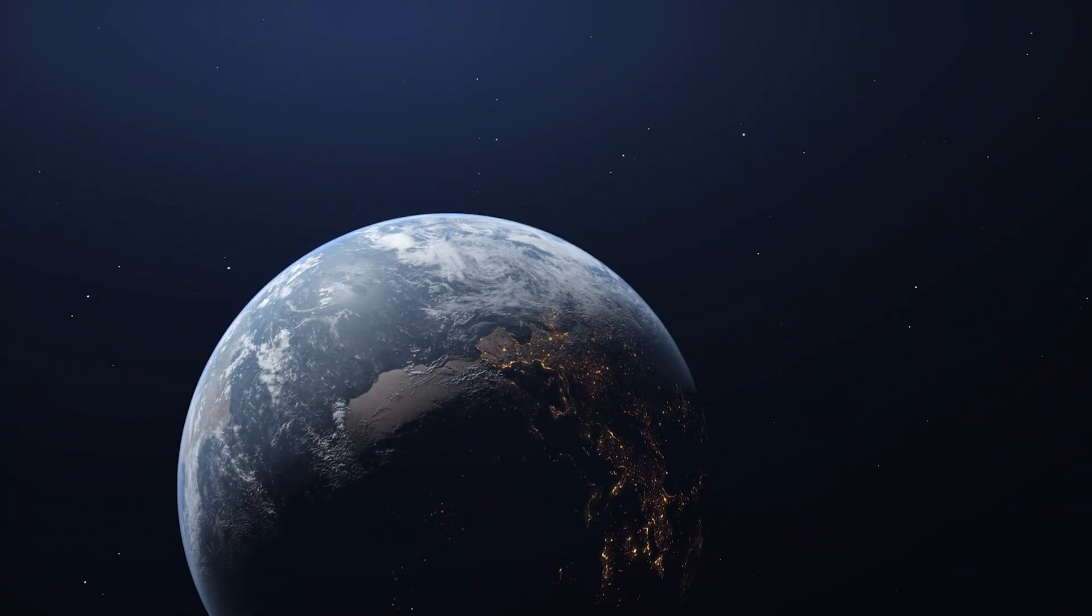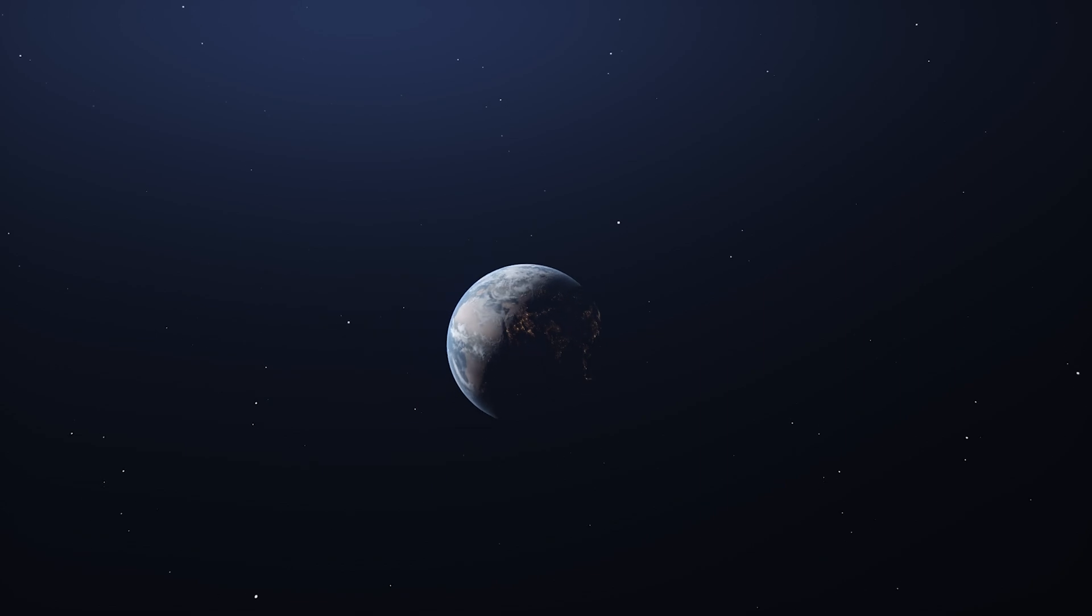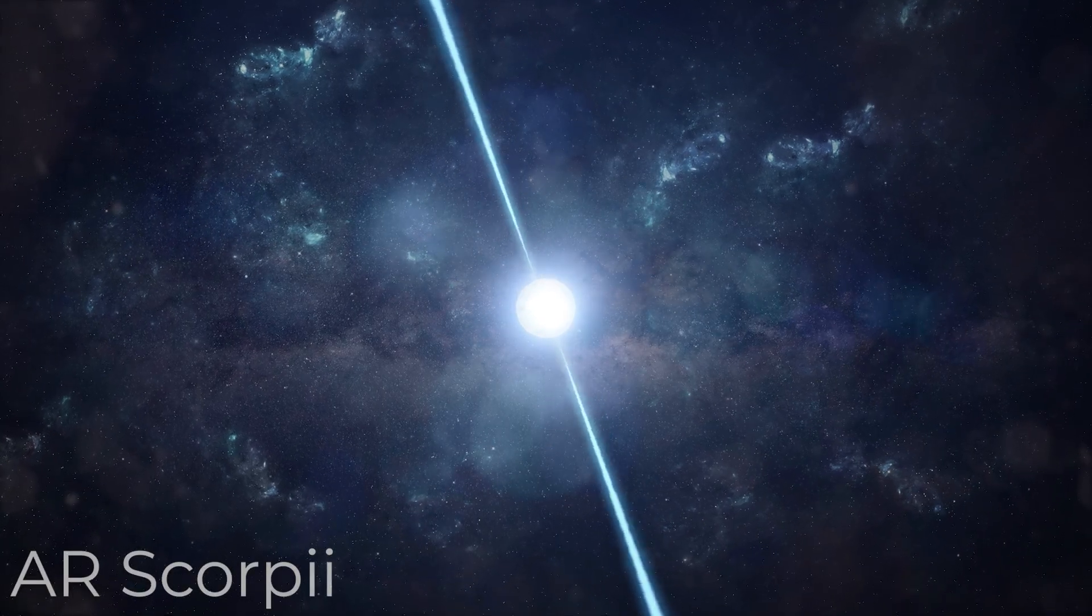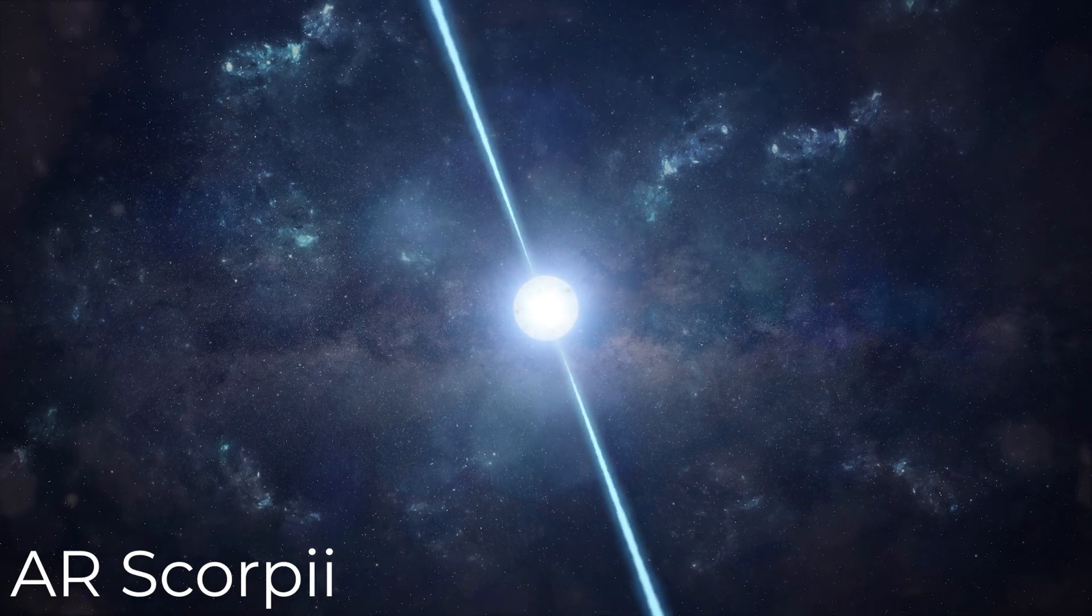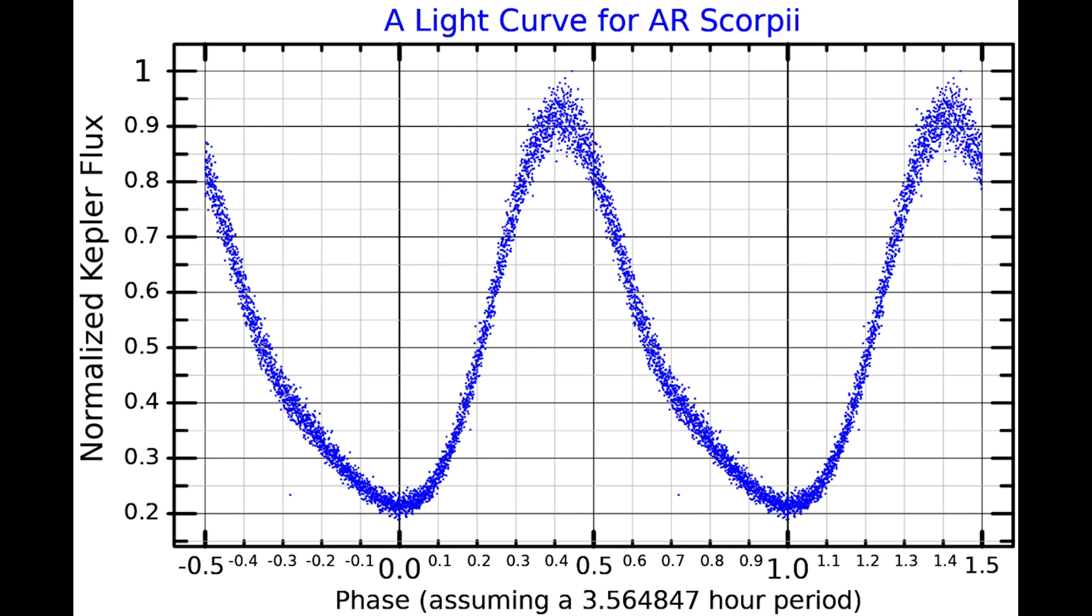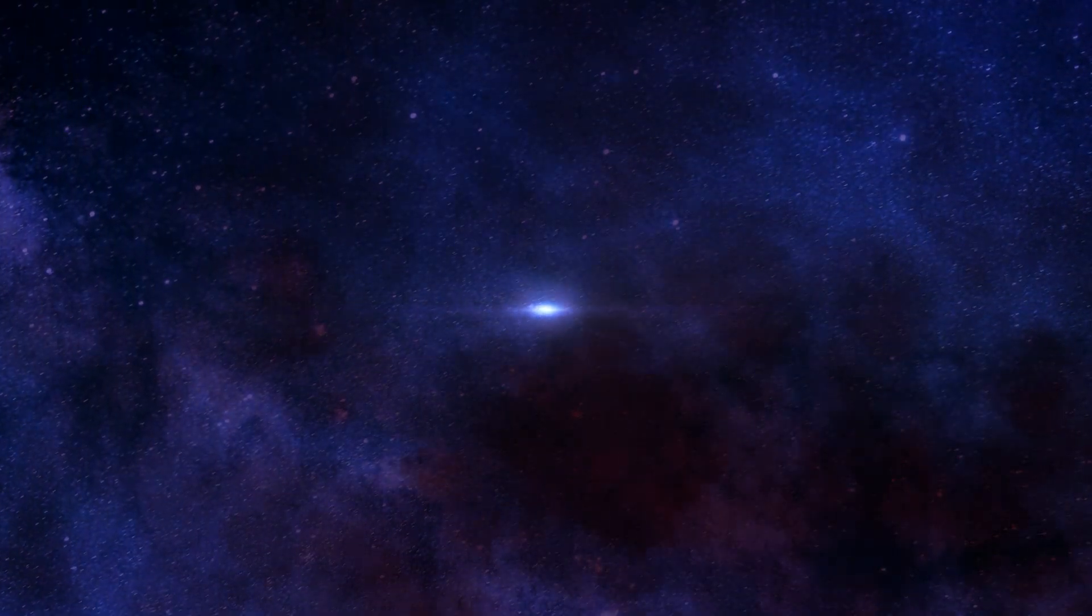Over 800 light years from Earth, in the constellation of Scorpius, a faint star flickers rhythmically in the night. This is AR Scorpii, the first known white dwarf pulsar, discovered in 2016. Every 1.97 minutes, like clockwork, AR Scorpii flashes a powerful beam of energy across space. It's as if a once still heart has begun beating again in a dead star's chest.